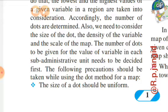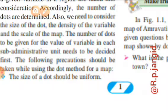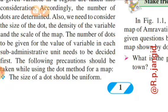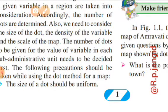Pehle se in cheezon ka dhyan rakhna padega — scale, particular area, kaunse size ka map use kar rahe hain — usi se dot ka size bhi define karna padega. Precaution one: the size of a dot should be uniform — same in size hona chahiye. Jaise example, 1000 ke liye dot ki size pen ki nib jitni rahegi — woh size same rehni chahiye har location pe. Agar dot ka size change ho gaya, toh dot method mein value galat aa jaayegi. Mind you students — this question can come in your exam: what are the precautions to be taken while using the dot method for a map?